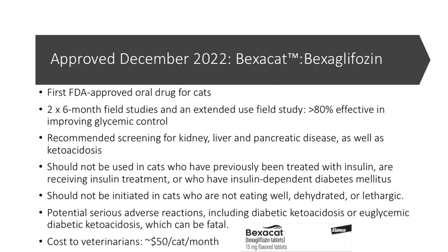A new drug has since been approved by another company, making it the first FDA-approved oral drug for cats: Bexacat. The results of two six-month field studies and an extended-use study showed over 80% effectiveness in improving glycemic control. Based on these trials and experimental studies, screening for kidney, liver, and pancreatic disease, as well as pre-ketoacidosis, is recommended. This drug should not be used in cats previously treated with insulin, currently receiving insulin, or with insulin-dependent diabetes mellitus — it is for non-insulin-dependent diabetes mellitus, the equivalent of type 2 diabetes in the cat.